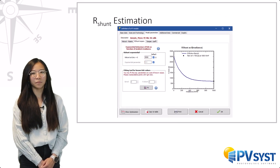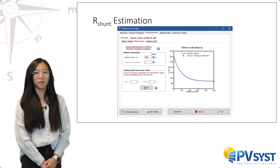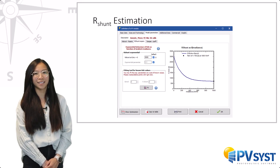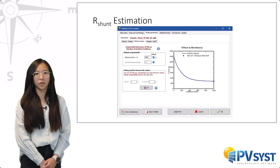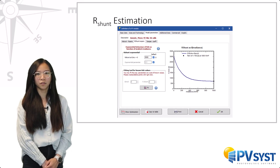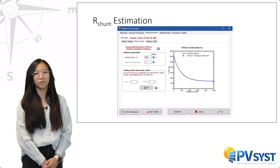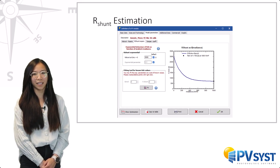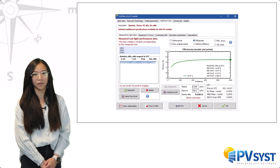For the exponential behaviour, we have observed that all modules measured at SUN are compatible with an exponential parameter of minus 5.5. The R shunt 0 is around 12 for amorphous modules and about 10 for crystalline. Again, these values do not have a big impact on the model's behaviour.